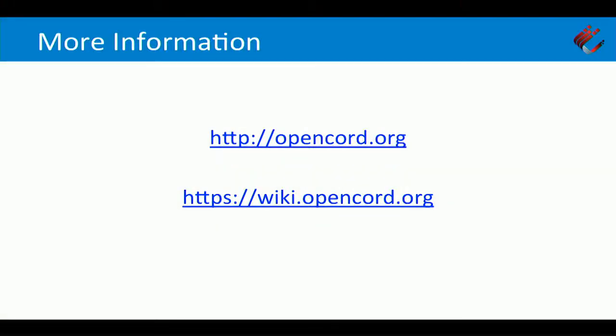CORD is an open source project with lots of ways to get involved: get on the Slack channels, get on the mailing lists, start asking questions, and start picking up projects. We've now announced four brigades — opportunities to join the community and work on specific deliverables that are important for the community. There are lots of ways to get involved.